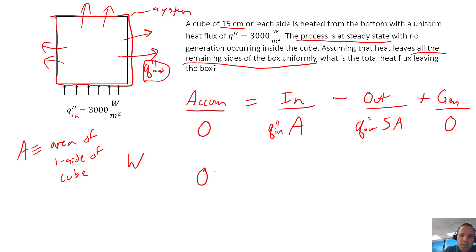We end up with zero equals Q double prime in times A minus Q double prime out times 5A. We could rearrange this equation and we would end up with Q double prime out. It's actually convenient here because the A's are just going to cancel out, so we never even had to use the width of each side. Q out is equal to Q in divided by 5.